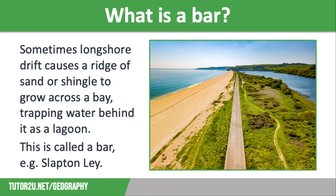Submerged bars lie a little offshore, forming in shallow water where there is plenty of sediment on a beach, where the sediment has been transported off and then back onto the beach. The offshore bar is formed when destructive waves remove the sediment. You often see waves breaking some distance from the coast due to friction caused by offshore bars. Submerged bars are so named as they are only visible during low tide. At high tide the bar is submerged and can only be identified by the waves breaking on it.